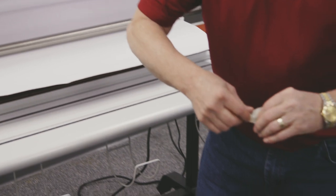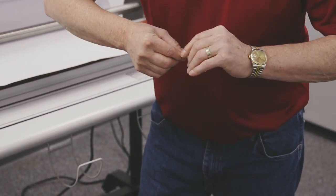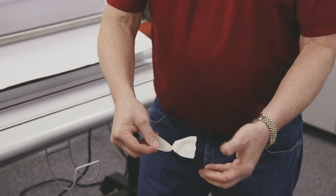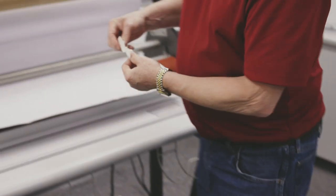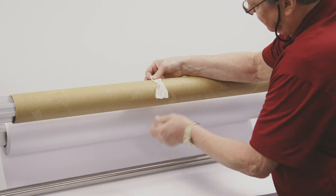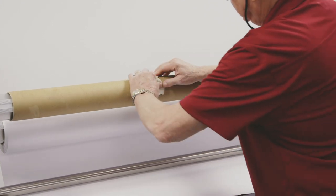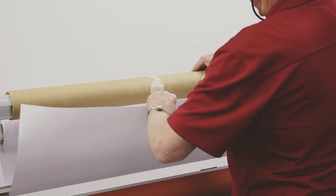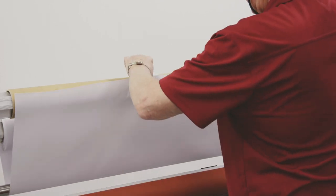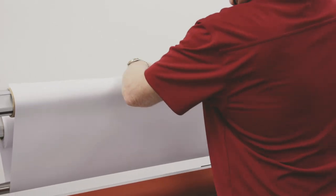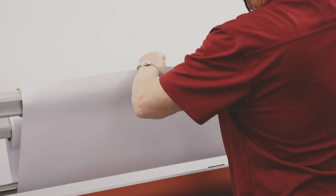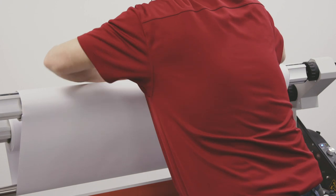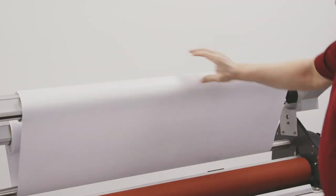I'm going to twist that 180 degrees so that I have adhesive here and adhesive here. I will attach that to the tube like this. And I'm going to bring this up, attach this, and I'll wind up about a roll, one full turn.